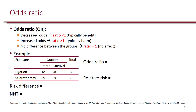When interpreting the odds ratio, we interpret it much like a risk ratio. If the odds ratio is less than 1, it means the odds have been decreased, which typically shows benefit. When the odds ratio is greater than 1, it typically means increased odds, which would mean increased harm. And if the odds ratio is 1, it means there is no difference between the groups.